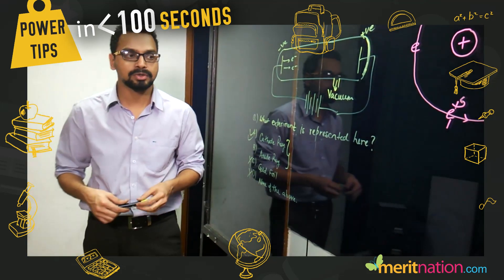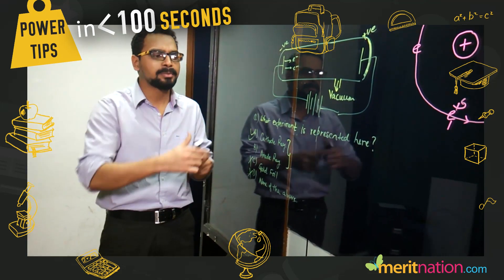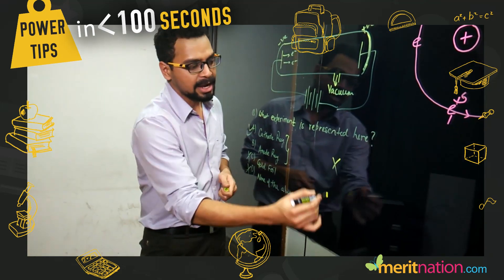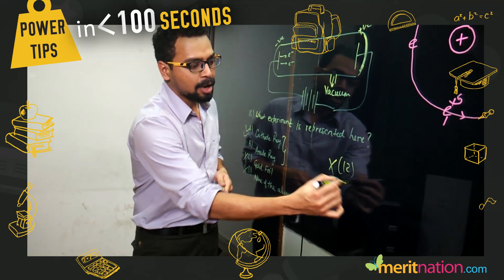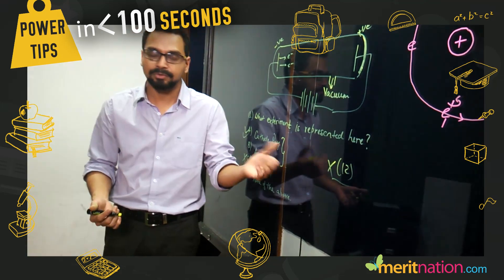You'll be provided an atomic number, or maybe just an element. Let's say element X is given to you with atomic number 12. How do you identify where this element is exactly in the periodic table? These kinds of questions come in, and in this case, generally you need to use electronic configuration.